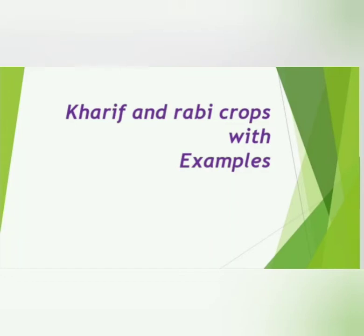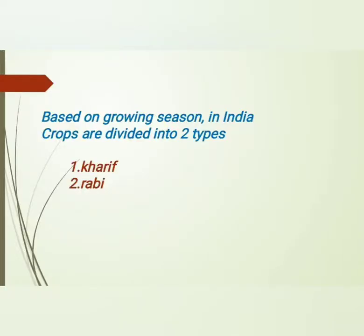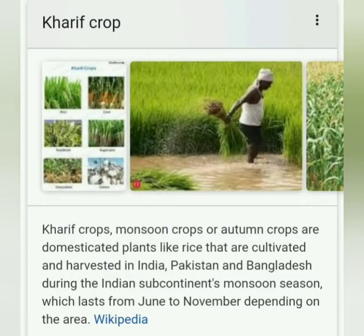Hello friends, hope you are all doing good. Today our topic is Kharif and Rabi crops with their respective examples. Based on the growing season in India, crops are divided into two types: the first one is Kharif crops and the second one is Rabi crops. They grow in their respective seasons.